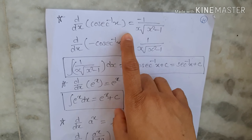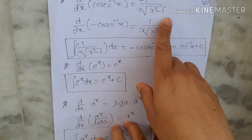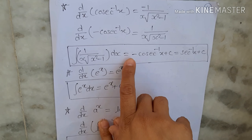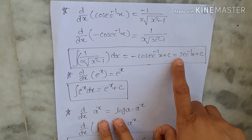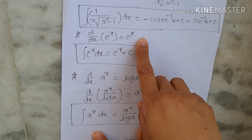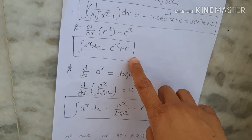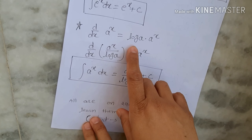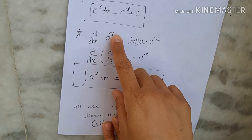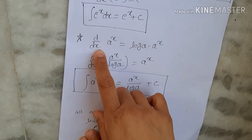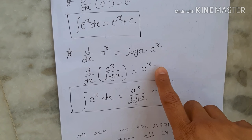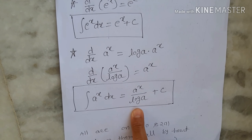Now, d/dx of e^x equals e^x, so integral of e^x dx equals e^x plus c. Next, d/dx of a^x equals log(a)·a^x, where a is a constant and x is the variable. So log(a) is constant; cross-multiplying gives d/dx of a^x/log(a) equals a^x. Therefore integral of a^x dx equals a^x/log(a) plus c.